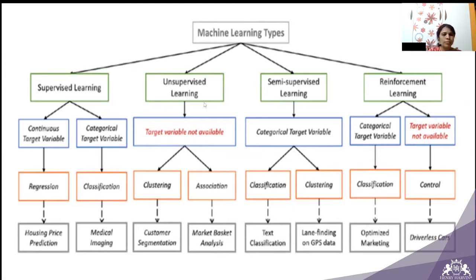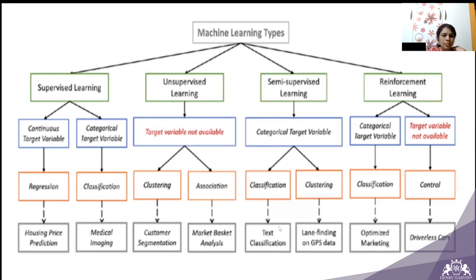In unsupervised learning there is no target variable, and there could be two cases: one is clustering and the other is association. Clustering — an example is customer segmentation; association is market basket analysis, which we will be seeing deeply. The next one is semi-supervised learning — here it involves categorical target variables, covering classification and clustering. Classification deals with text-kind data, and for clustering an example is lane finding on GPS data.